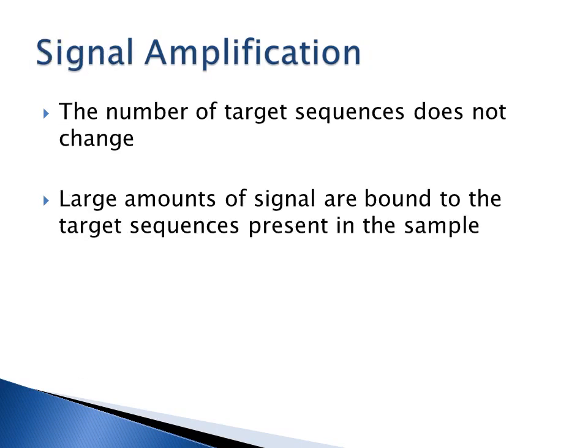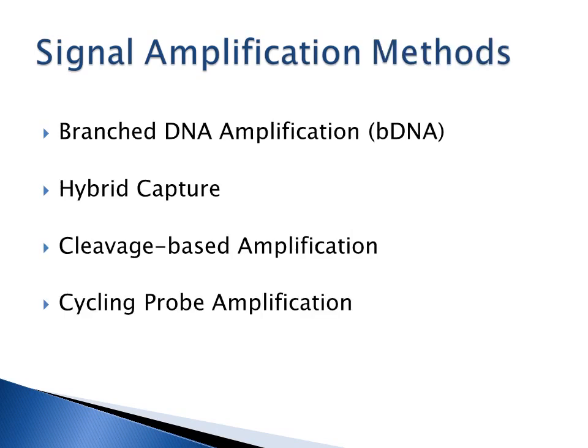In signal amplification, the number of target sequences doesn't change. Large amounts of signal are bound to the target present in the sample, and you're amplifying and looking at that signal as opposed to the target. Signal amplification methods include branch DNA amplification, hybrid capture, cleavage-based amplification, and cycling probe amplification.